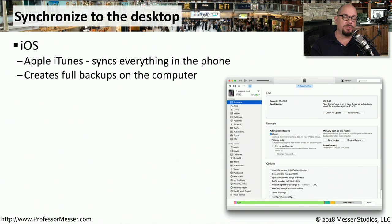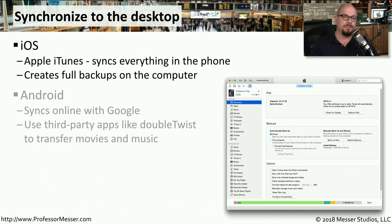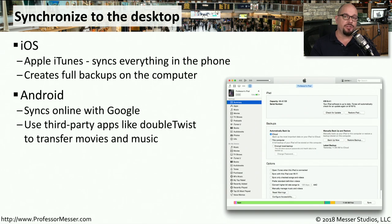This could be gigabytes in size, so you have to make sure you have enough free disk space. Apple provides iTunes to make backups of your iOS devices, and it creates a complete backup on your computer. If you get a new iOS device, you can plug in your computer to this device and iTunes will restore everything to that new iOS device. If you have an Android device, there's no built-in process for storing information on the desktop. By default, everything is stored in the cloud. There are some third-party applications, such as DoubleTwist, that allow you to transfer movies or music to and from your Android device.